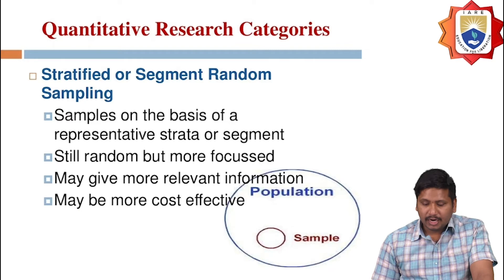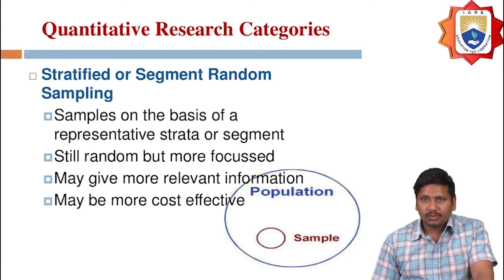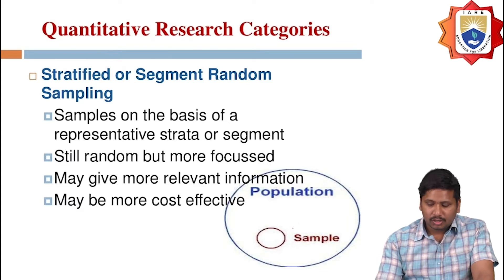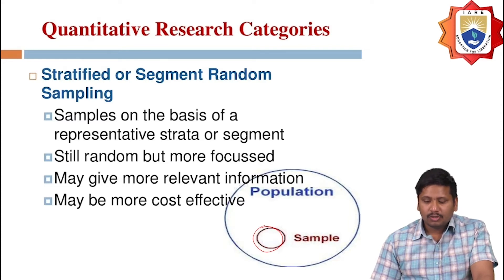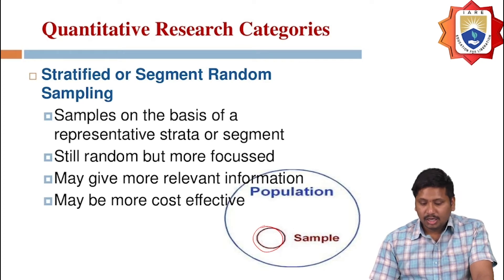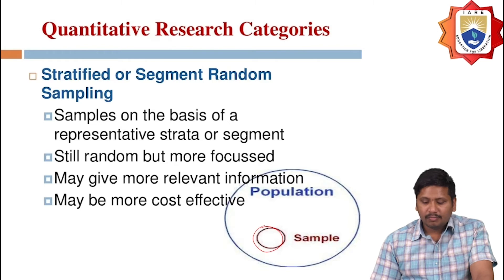The next sampling method is stratified or segment random sampling, where sampling is done on the basis of a representative segment. It is still random, but more focus is applied, which may give more relevant information and can be more cost effective compared to pure random sampling.